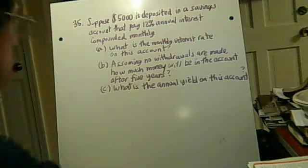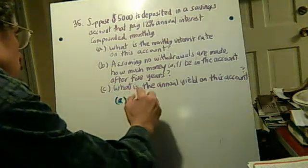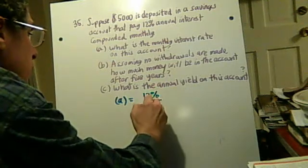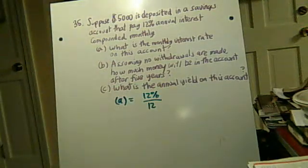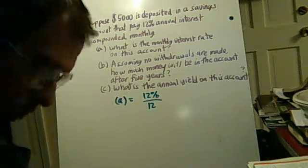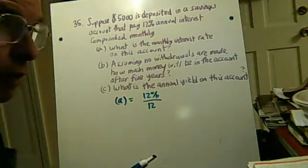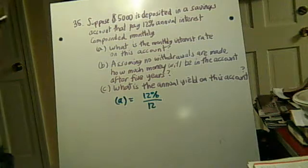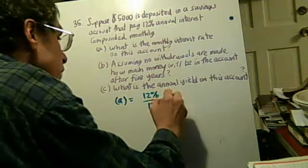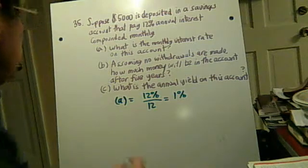So let's start with (a), what is the monthly interest rate? Well, the monthly interest rate is just the annual rate divided by 12, because when you compound monthly, you add the interest 12 times, but each time you do it, you only do it at one twelfth of whatever the so-called annual number is. So that's 12% divided by 12 is 1%, so the monthly interest rate would be 1%.